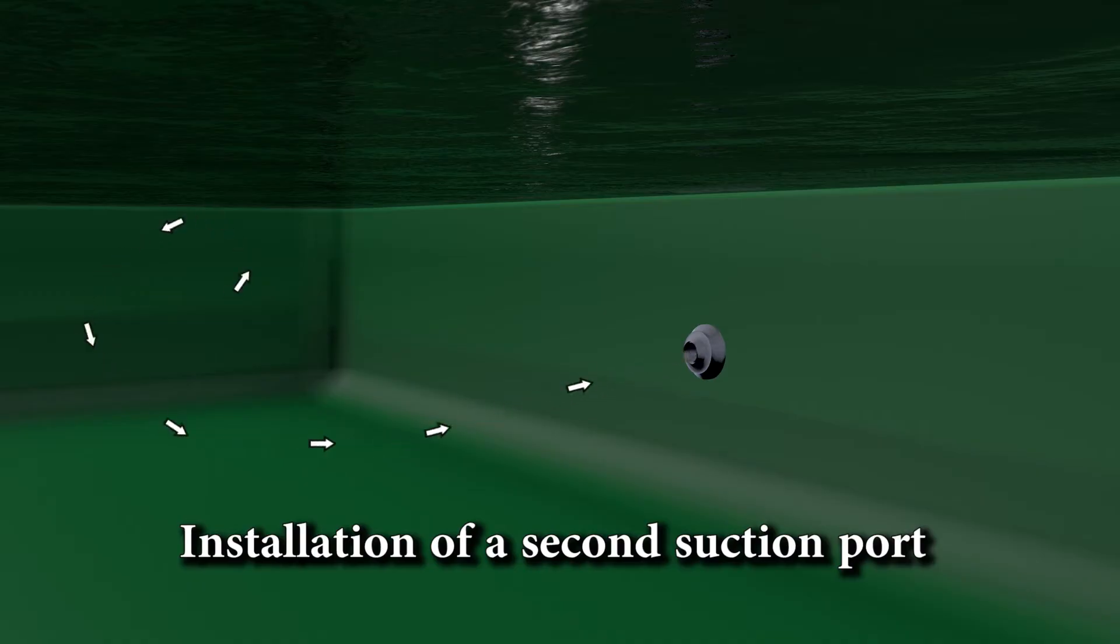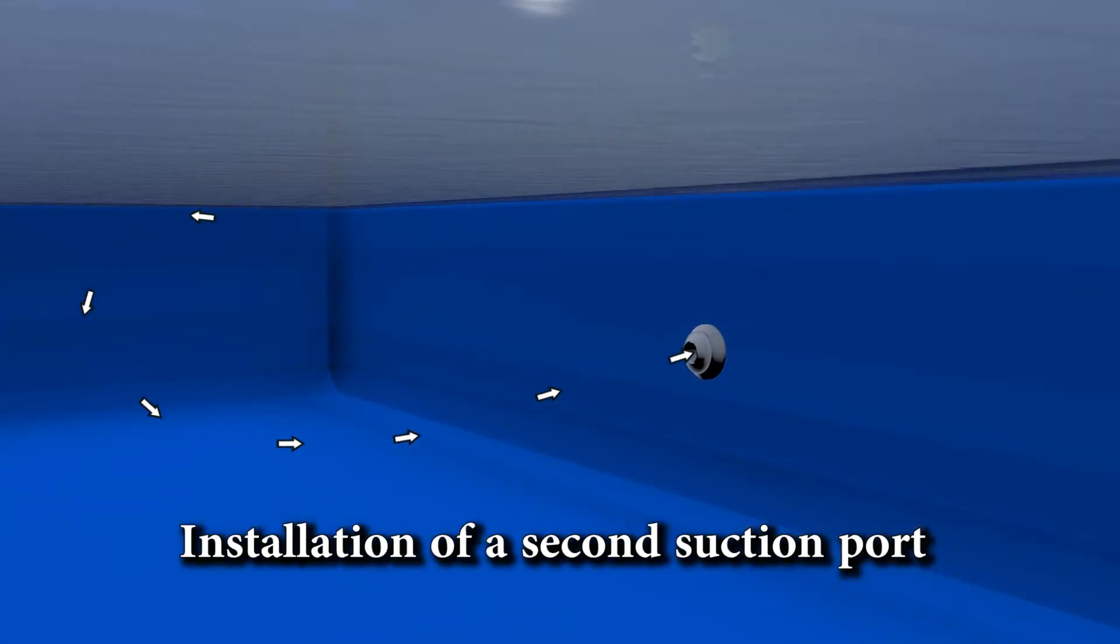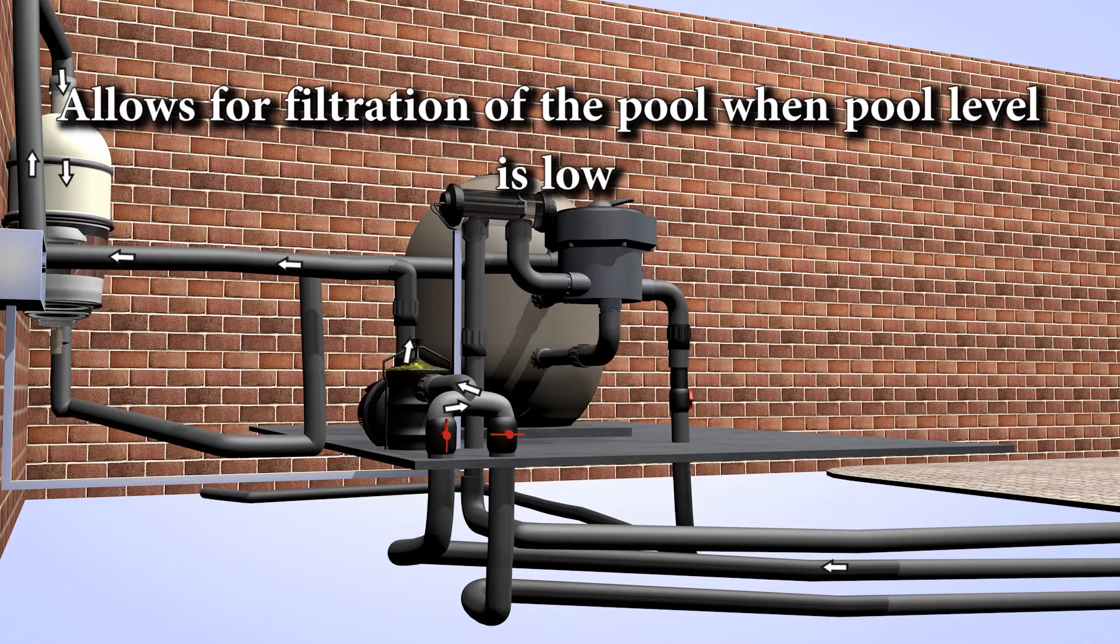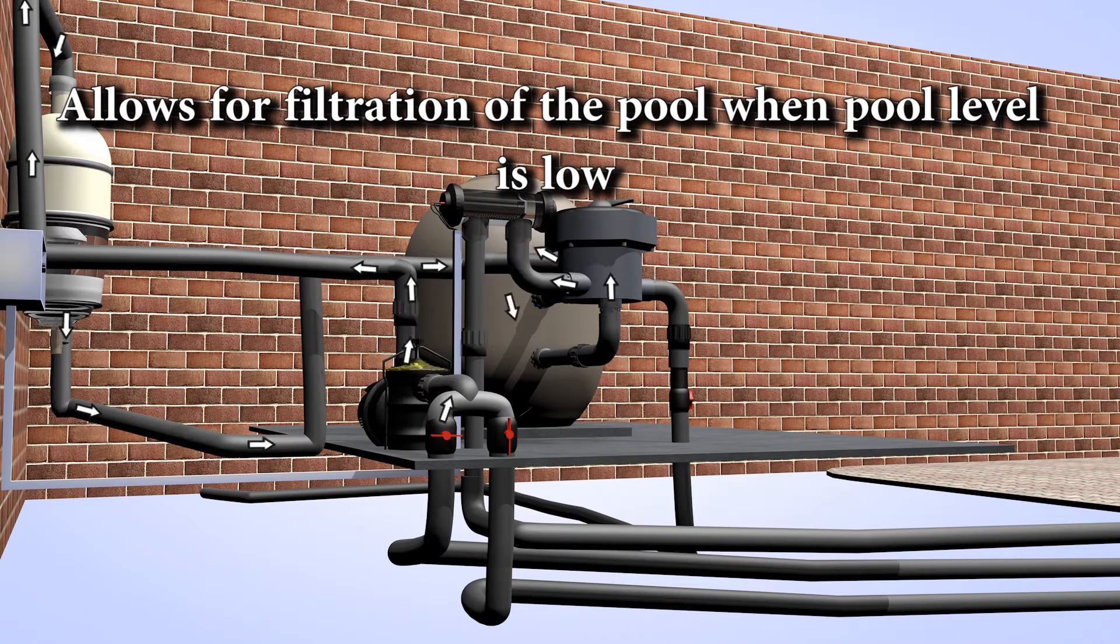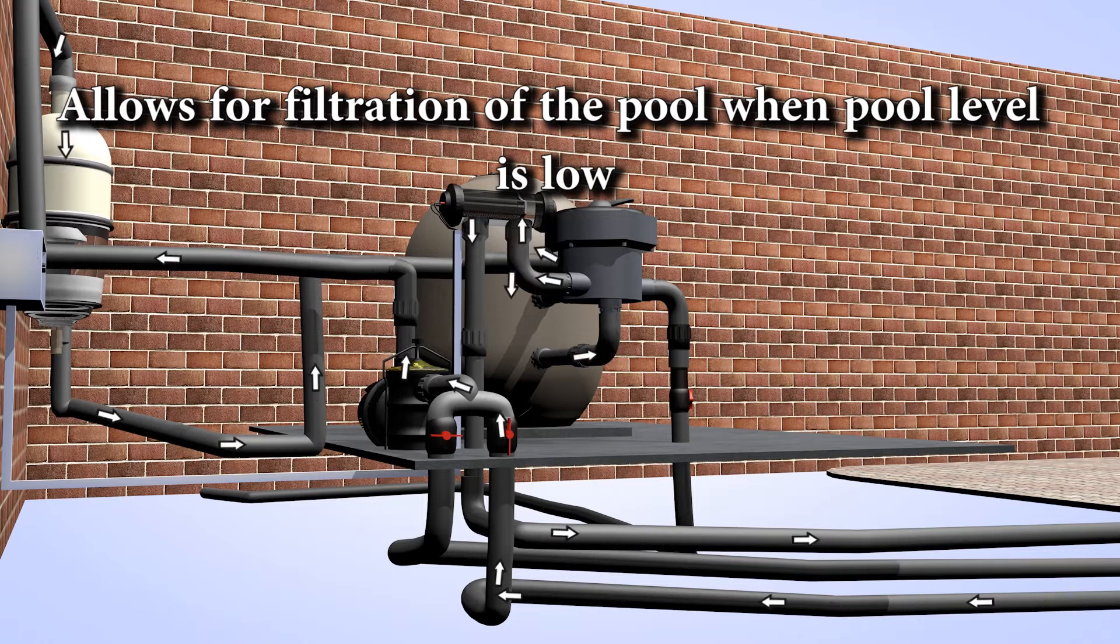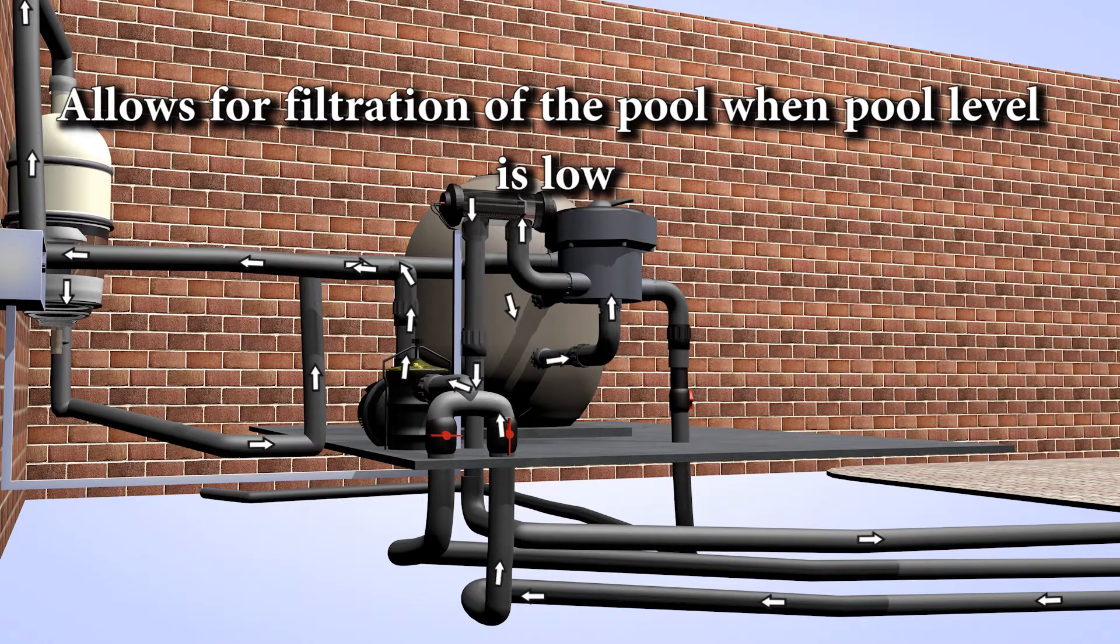They highly recommend a second suction port to be installed lower in the pool under the skimmer box. By simply changing a valve position at the pump, this will allow the filtration of the pool water, even if the water level drops due to water shortages.